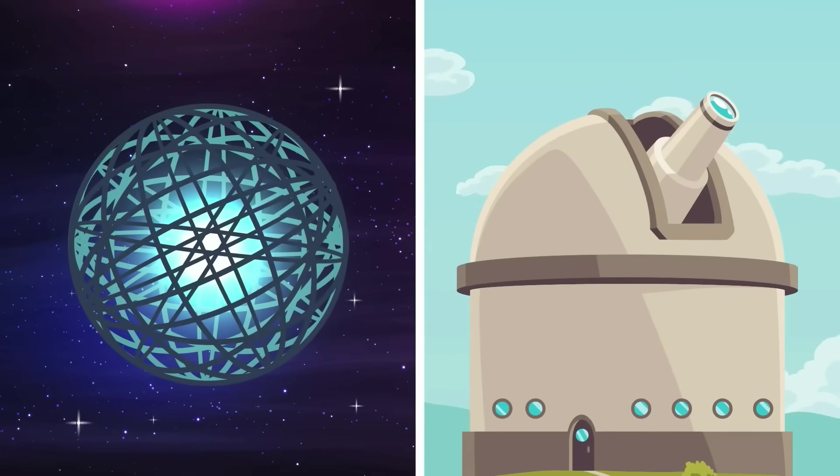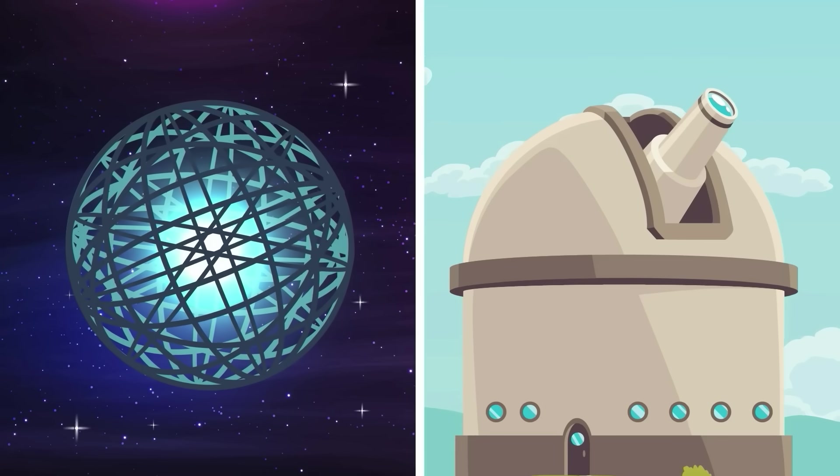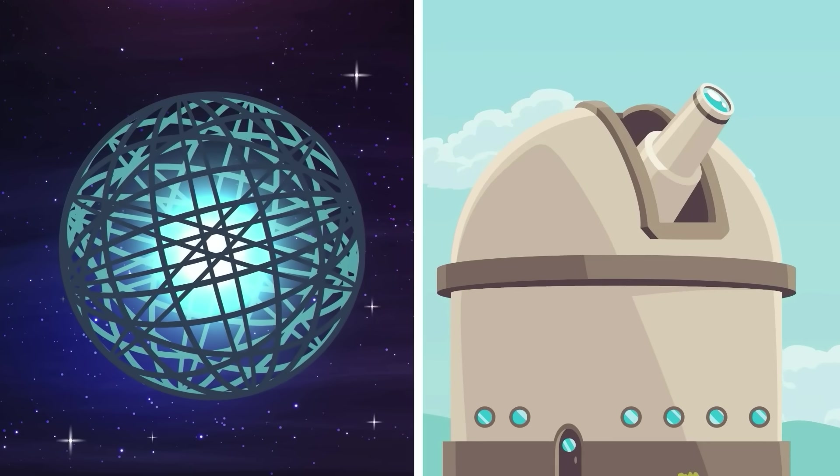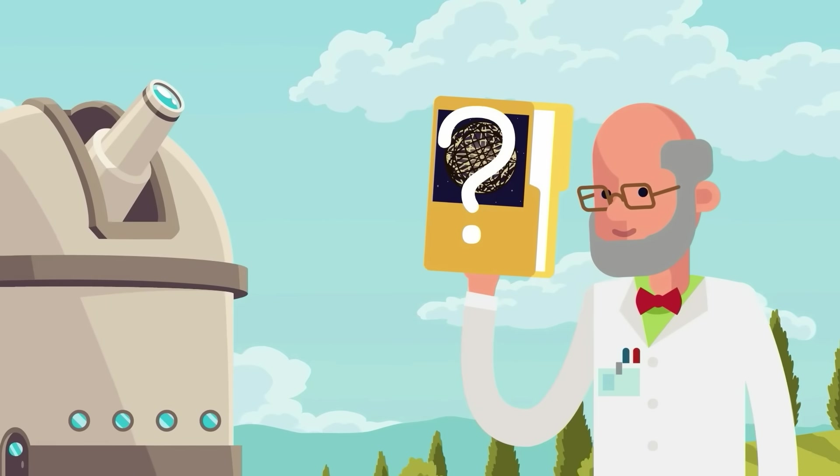Like most stars, they likely have satellites orbiting them, but our telescopes aren't advanced enough to reveal what those planets look like. So, have we found our first Dyson spheres?